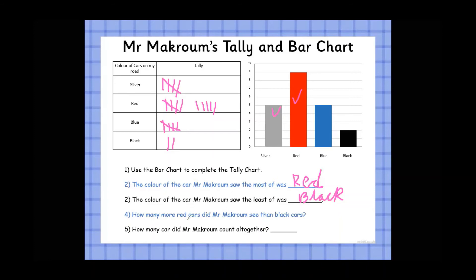Question 3: the colour he saw the least of was black. Question 4: how many more red cars did Mr Macram see than black cars? We're finding the difference, which means subtracting. We can either do 9 minus 2, which gives us 7, or we can start at 2 and count on to 9: three, four, five, six, seven, eight, nine — that's 7 steps. So the answer is 7.